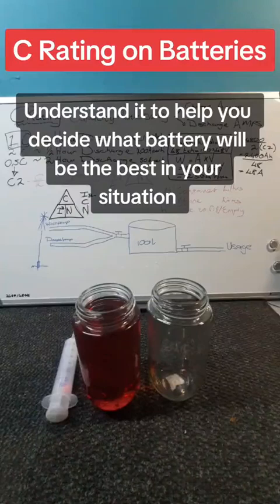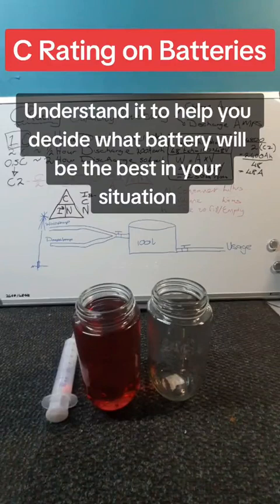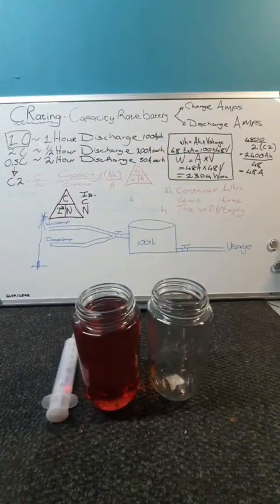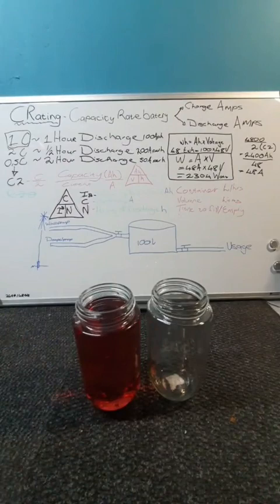Every battery has a C rating, which is basically the capacity rate that the battery can either charge or discharge. Just an illustration on how it will work.